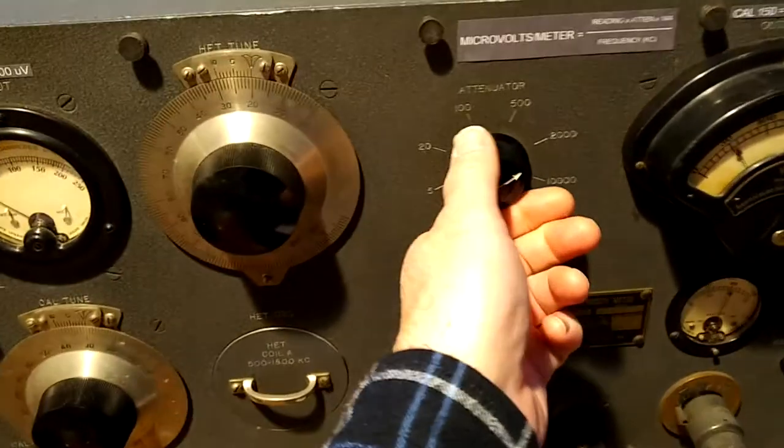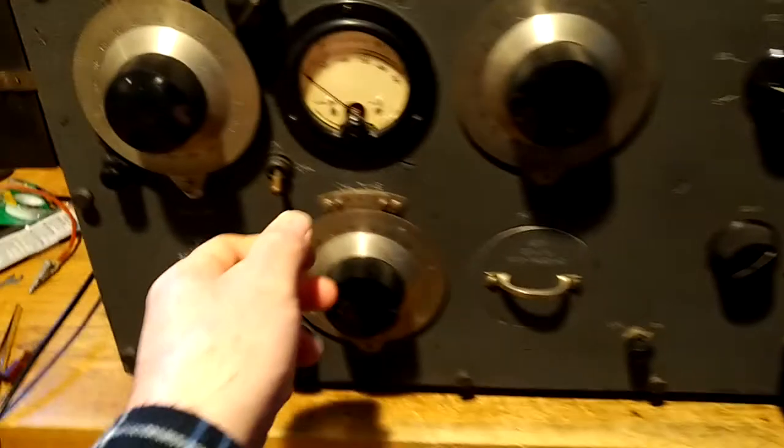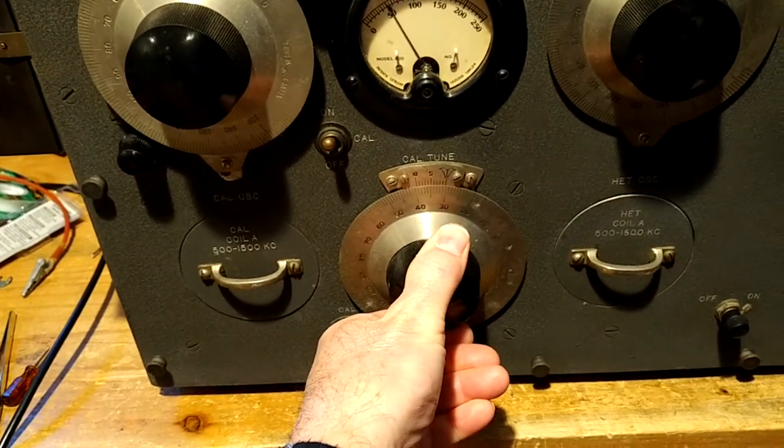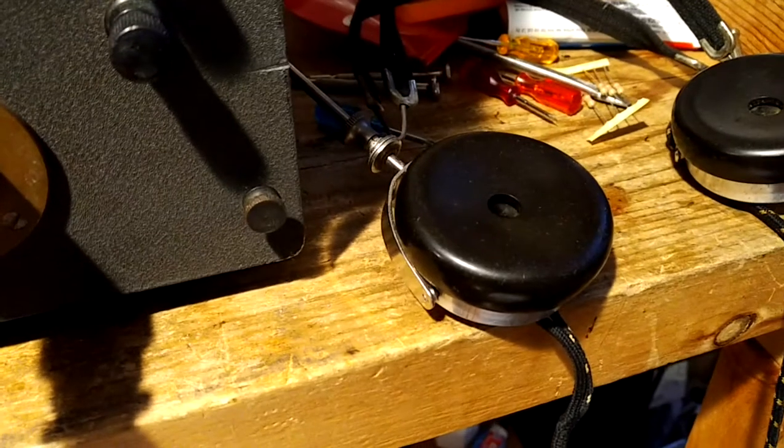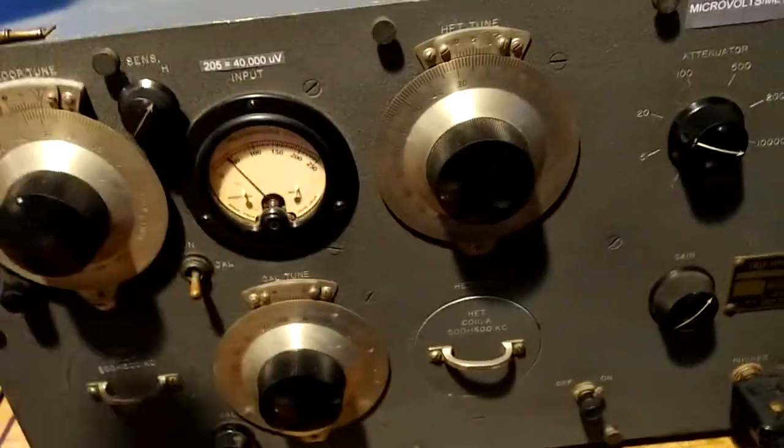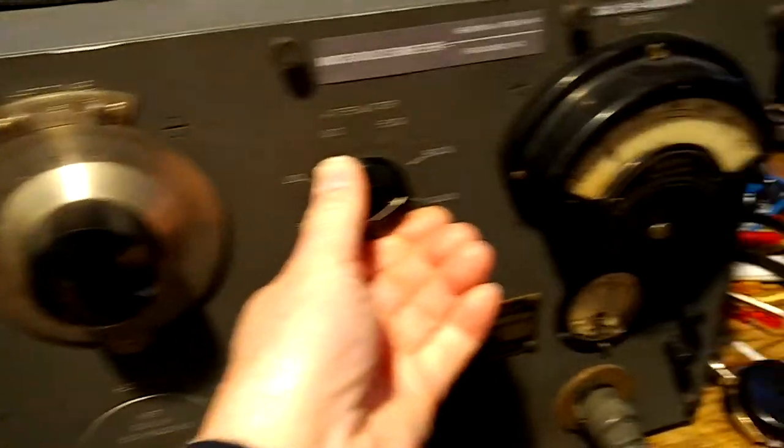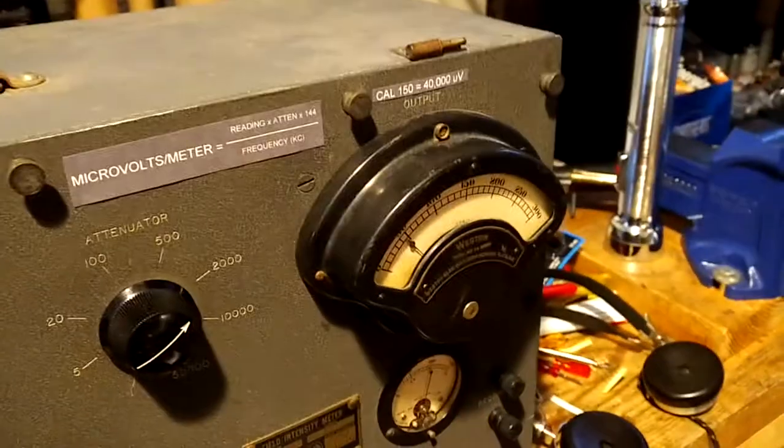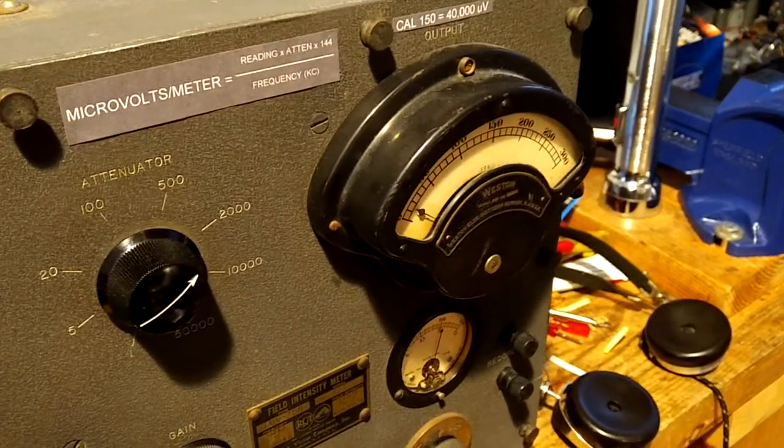Next, increase the attenuation somewhat to prepare for the strong calibration signal. We want to get the frequency of that oscillator exactly at 640 by zero beating. And turn off the calibration oscillator. And rotate the loop antenna for a minimum signal just to get it so it doesn't affect our calibration.